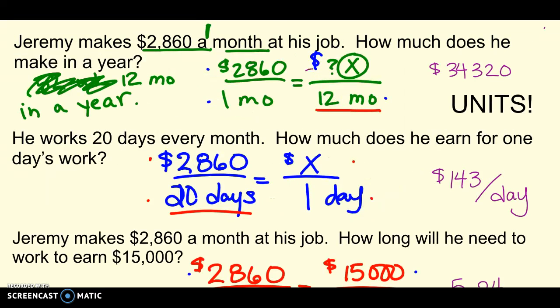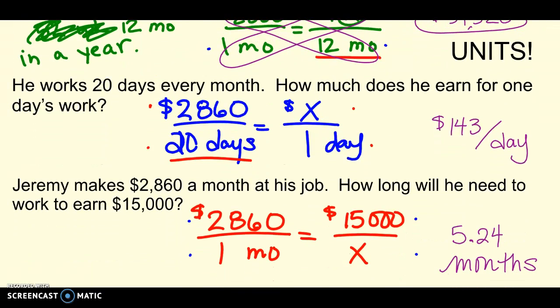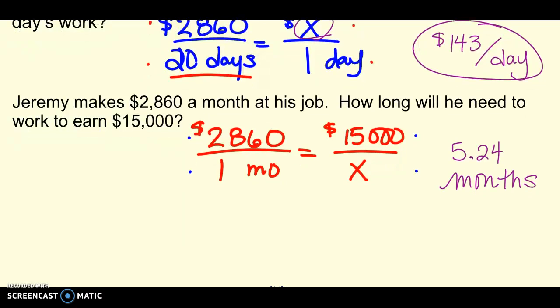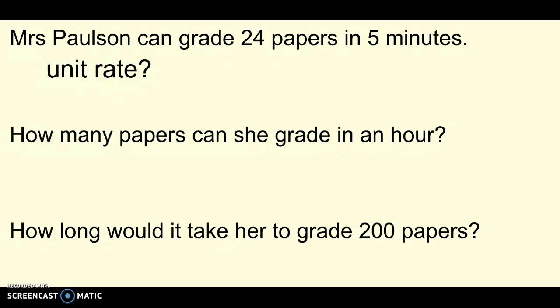Okay. All I did was finish the cross products, right? Multiplying these, multiplying these, and then solving for X. So, I got $34,000. That's how much he could make in a year. When I just figured out X here, he makes $143 a day with a label. Put labels and units on it. And, then when I solved for this X, how many months would he have to work to make $15,000? Four point, or sorry, 5.24 months. So, there's three more for you to practice.